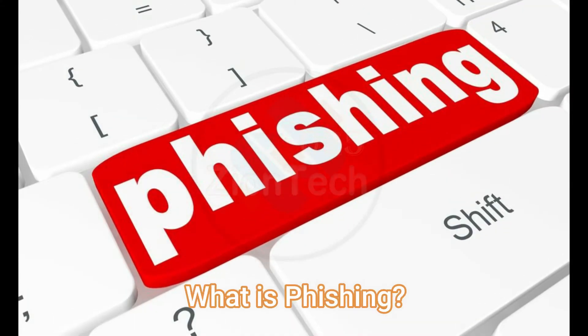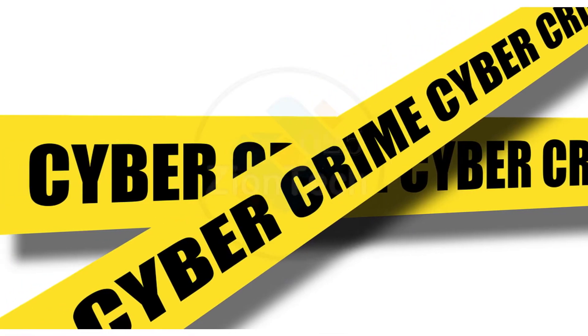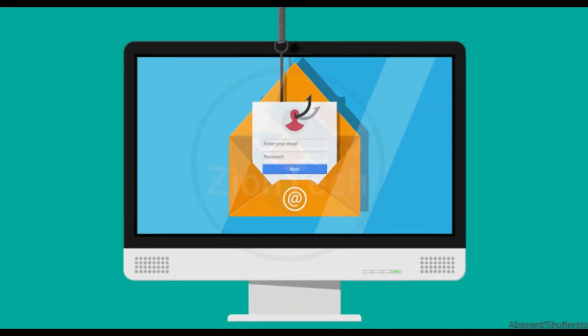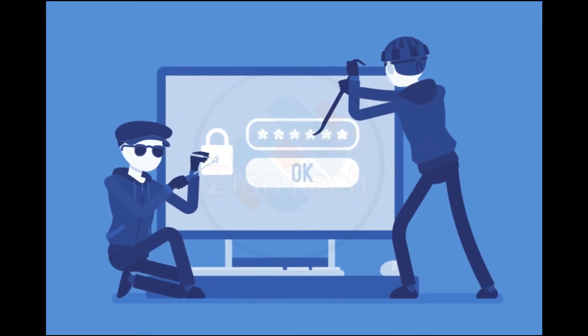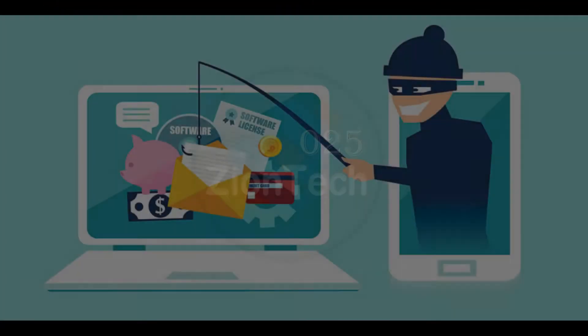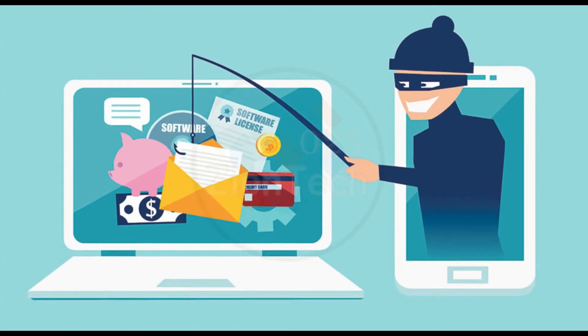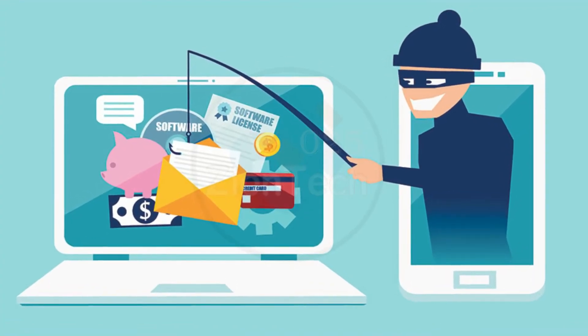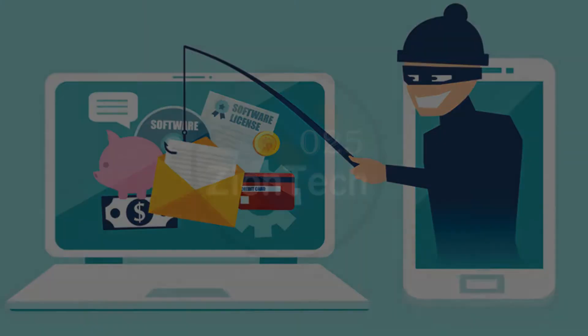First we need to know, what is phishing? Phishing is a cybercrime that uses tactics including deceptive emails, websites, and it is a method of trying to gather personal information. The goal is to trick the email recipient into believing that the message is something they want or need — a request from their bank, for instance, or a note from someone in their company — and to click a link.